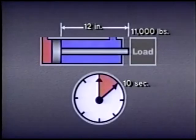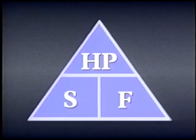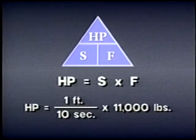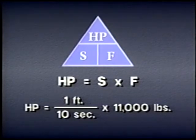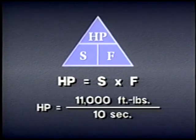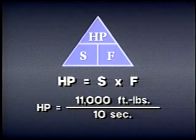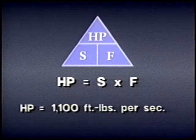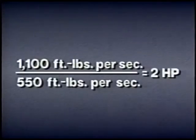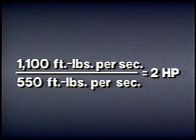For example, suppose we need to know how much horsepower it will take to move an 11,000-pound load 12 inches in 10 seconds. Horsepower equals speed times force. The speed is one foot every 10 seconds, and the force is 11,000 pounds. One foot times 11,000 pounds is 11,000 foot-pounds, divided by 10 seconds, giving 1,100 foot-pounds per second. Since one horsepower equals 550 foot-pounds per second, the cylinder must develop two horsepower.